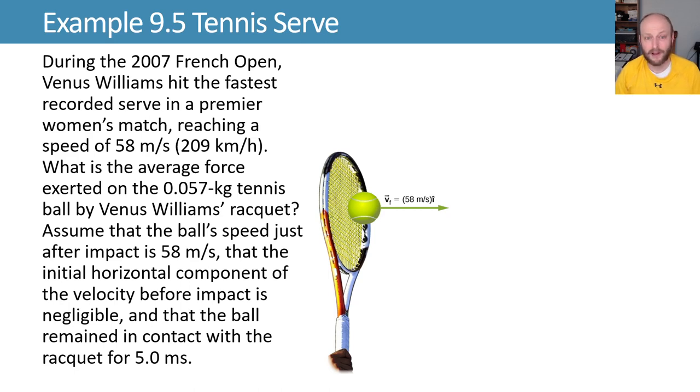During the 2007 French Open, Venus Williams hit a really fast serve and we want to figure out what's the average force that's exerted on the tennis ball by the racket during this serve. We'll use 58 meters per second as the speed after impact and assume that it was in contact for five milliseconds.